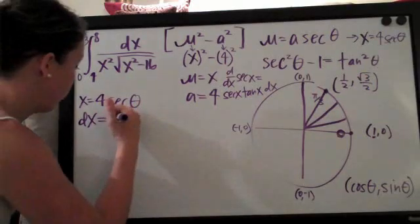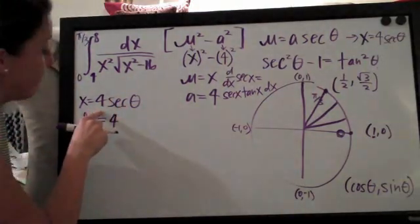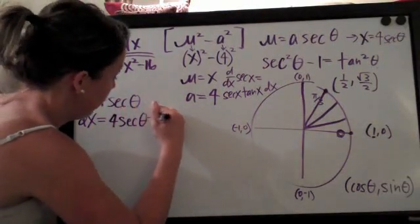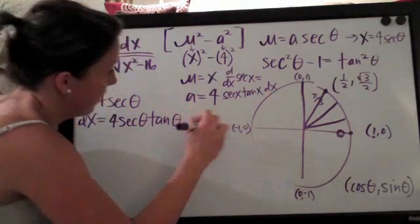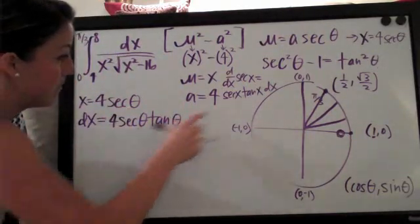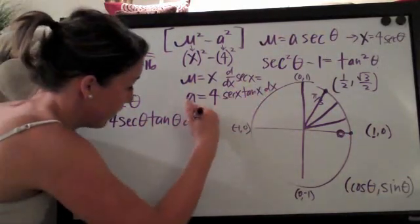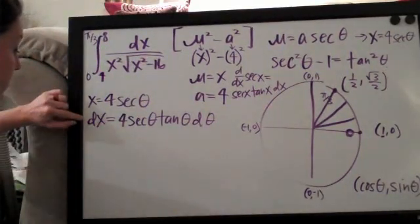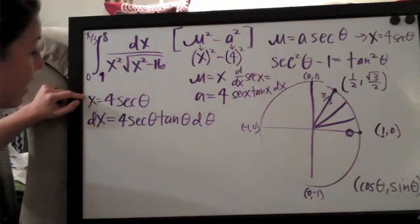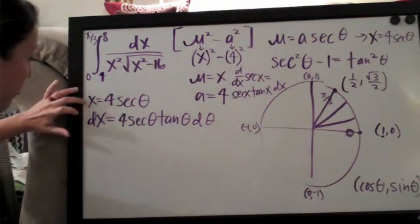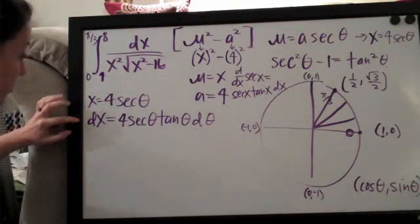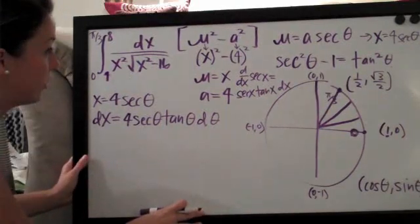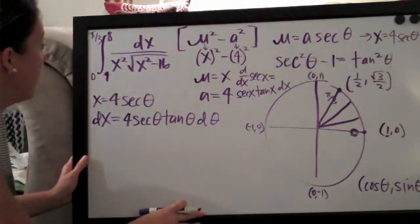So the derivative will be four, you can just go ahead and leave that constant, four secant theta tangent theta. And since we're doing everything in terms of thetas here, this d of x is d theta. So this is the derivative, this dx here is the derivative of x. We needed those two things because once you found x and then solve for dx, we're going to go ahead and plug these values back into our original function here.